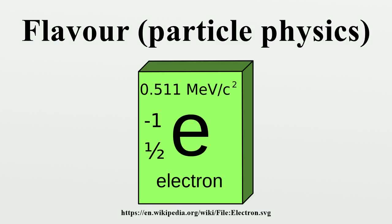In particle physics, flavor refers to a species of an elementary particle. The standard model counts six flavors of quarks and six flavors of leptons. They are conventionally parameterized with flavor quantum numbers that are assigned to all subatomic particles, including composite ones. For hadrons, these quantum numbers depend on the numbers of constituent quarks of each particular flavor.